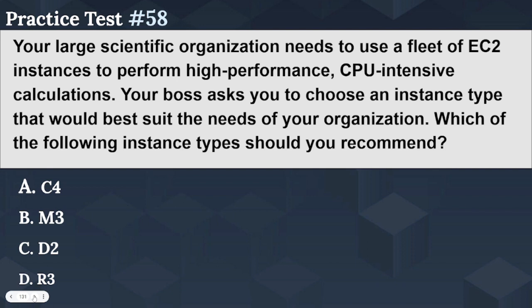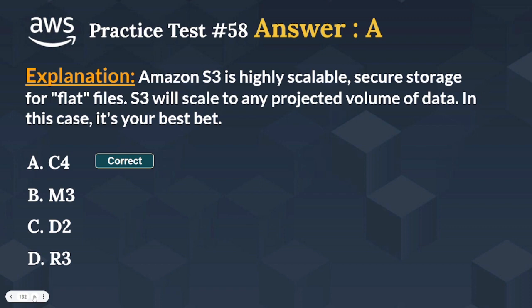The right answer is Option A: C4. C instances are recommended for high performance front-end fleets, web servers, batch processing, distributed analytics, high performance science and engineering applications, ad serving, MMO gaming, and video encoding. The best answer would be to use a C4 instance.